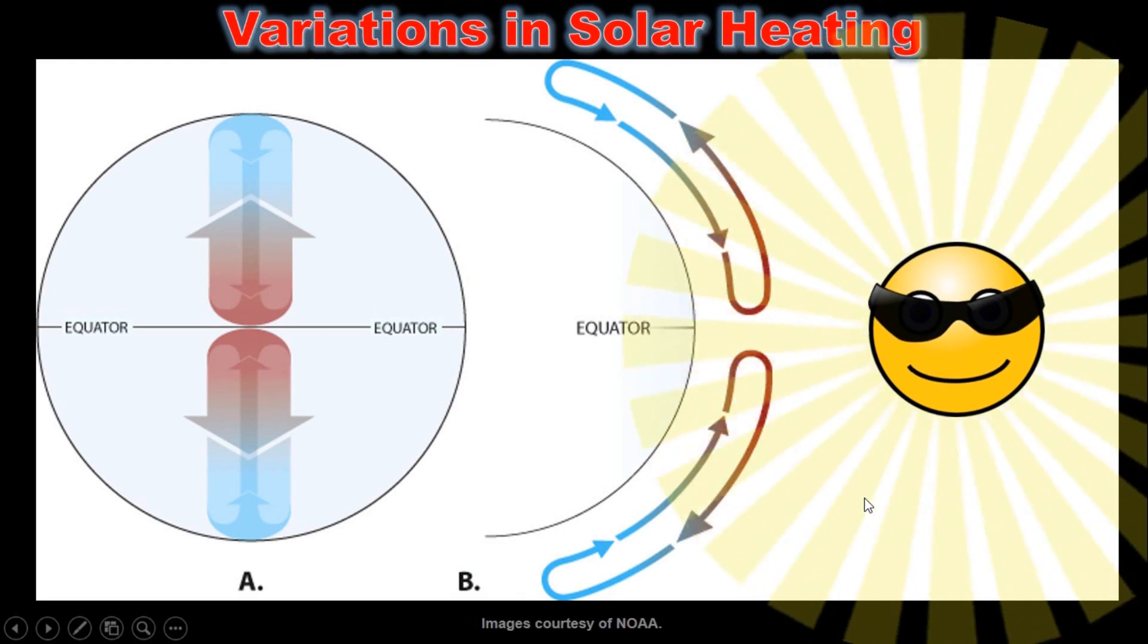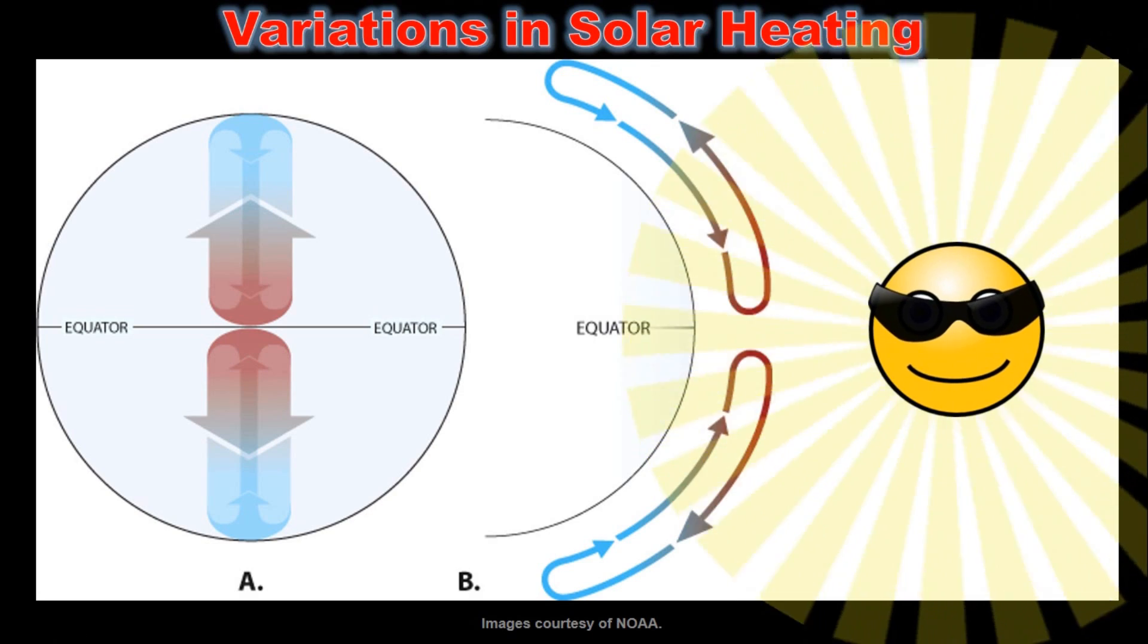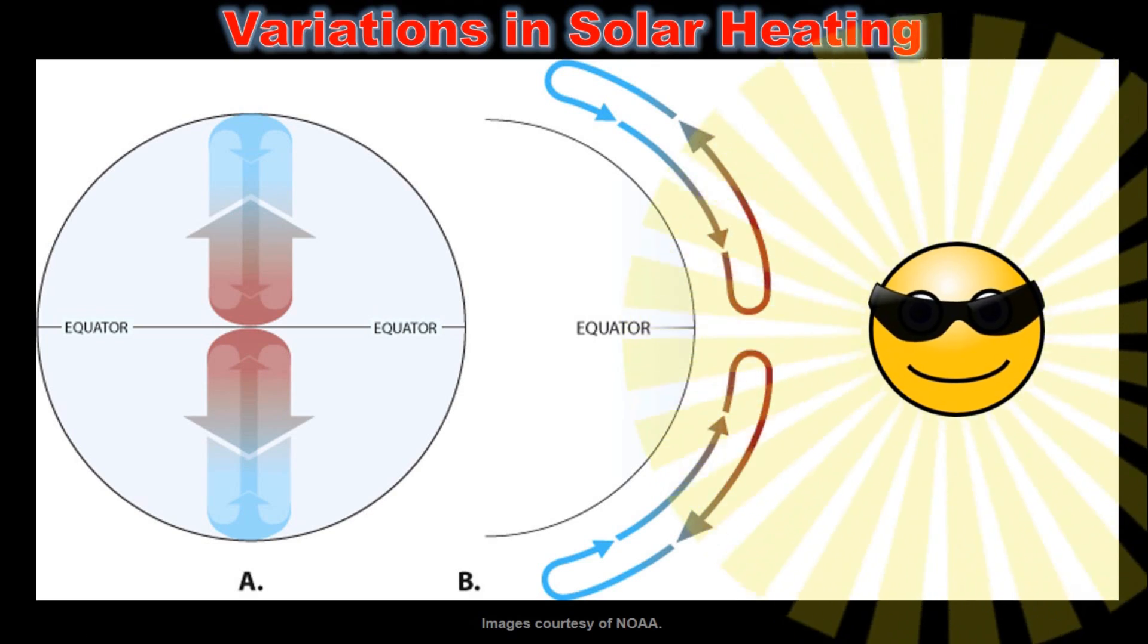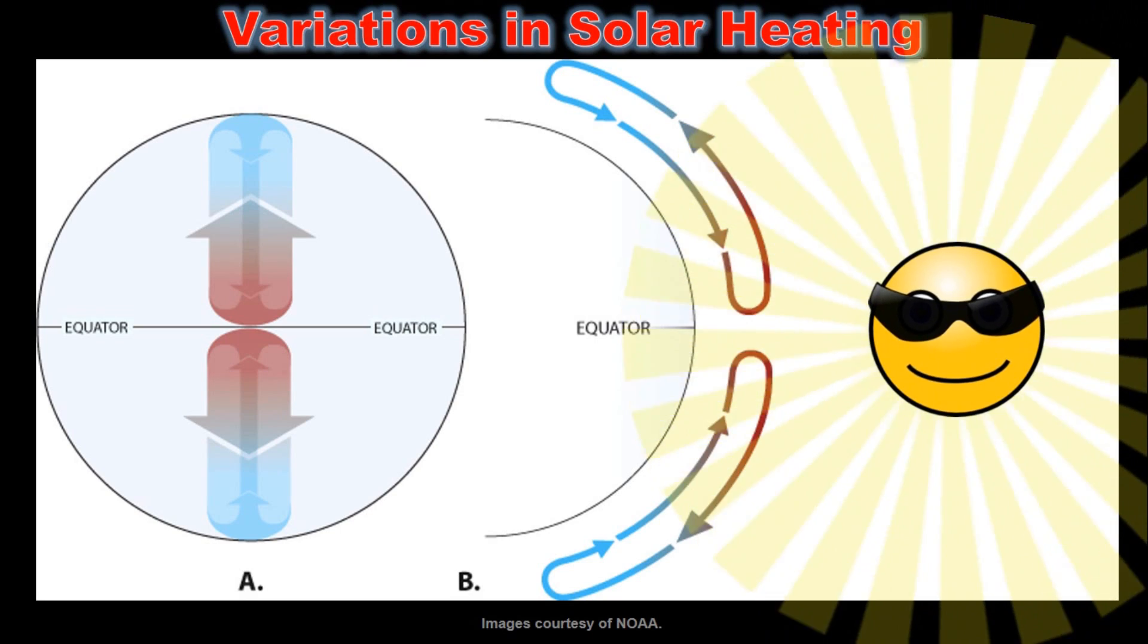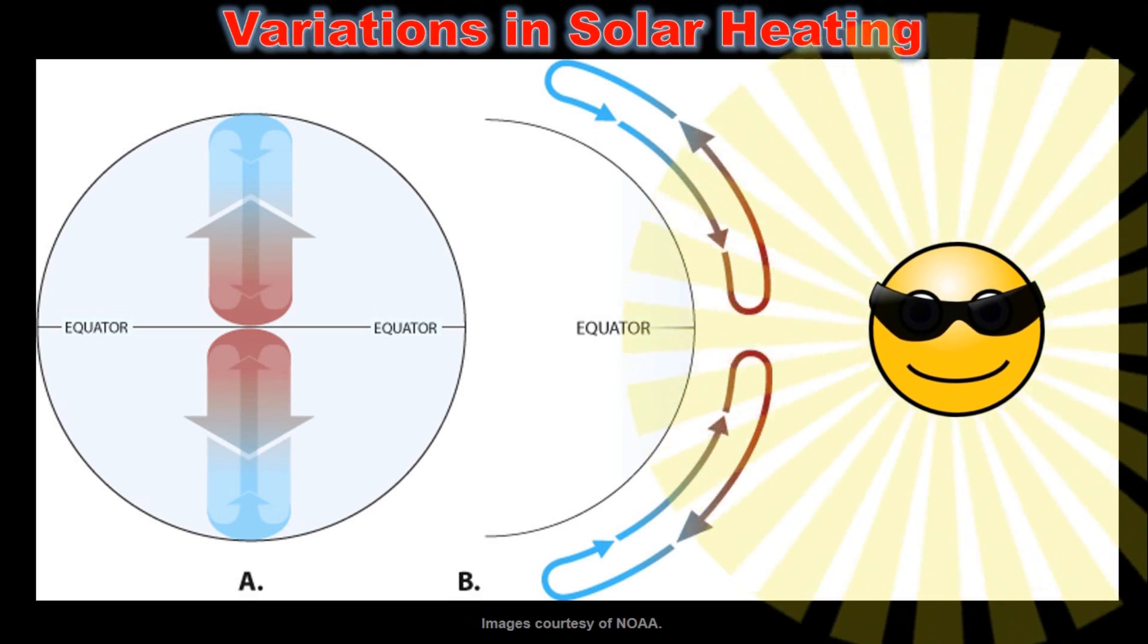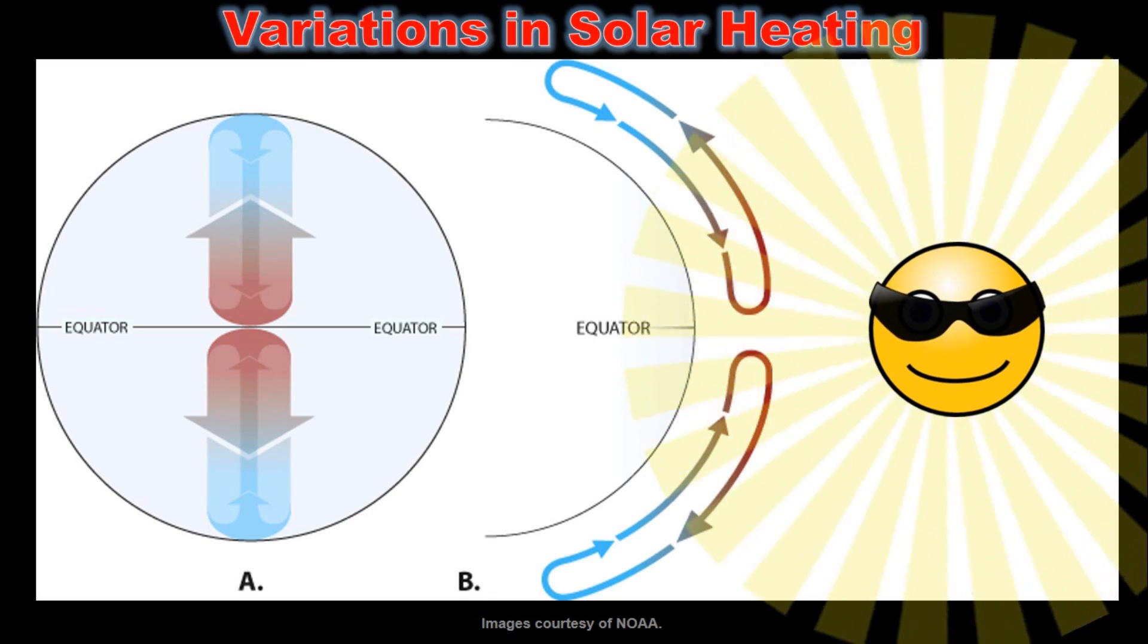To understand the Coriolis effect we first need to understand that winds are generated due to temperature differences on the surface of the earth. These differences in temperature come about for a number of reasons. The ones relative to this discussion are how long the Sun shines and the angle the Sun is striking the earth.